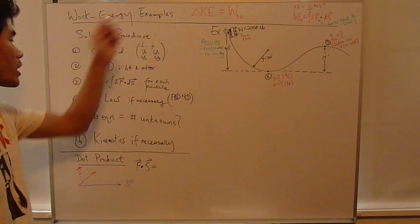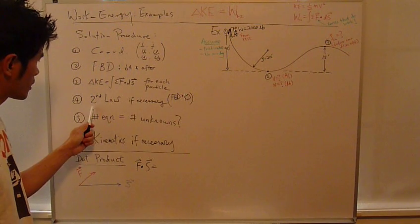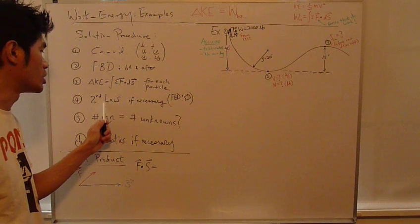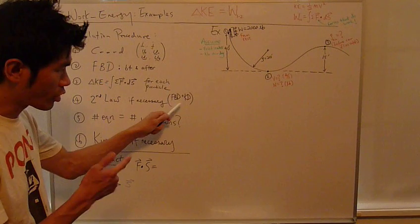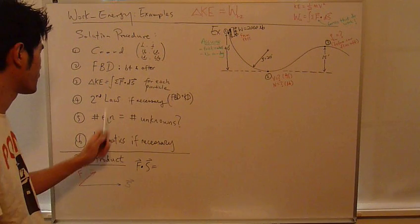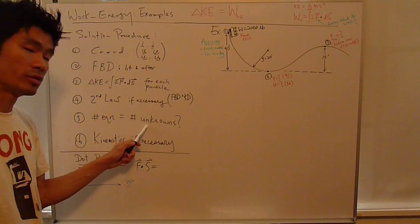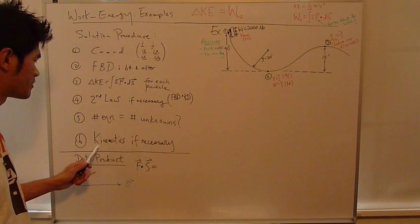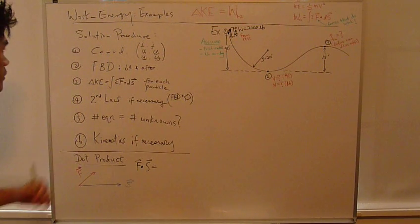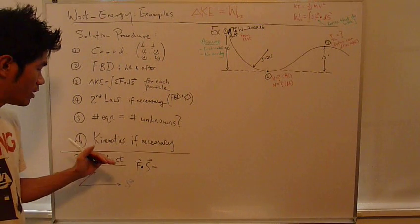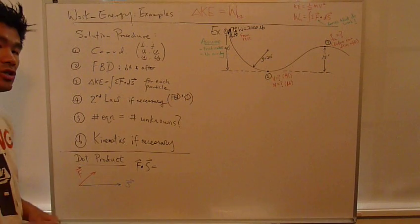Next, you apply the work energy equation for each particle. Now, sometimes, you do need to bring in Newton's second law. In that case, you draw a free body diagram and a kinetic diagram for each particle. Then you count whether the number of equations equals the number of unknowns. If not, you bring in kinetics. So, this is a very logical procedure to solve for kinetics-type problems using the work energy method.